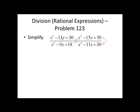Now we have four trinomials to factor here. Multiply to 30 but add to negative 13. That would be x minus 3 and x minus 10. In the denominator, two numbers that multiply to 18 but add to negative 9. That would be x minus 3 and x minus 6.